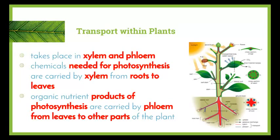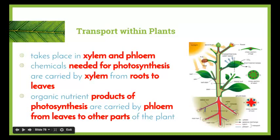The chemicals needed for photosynthesis are carried by the xylem from the roots to the leaves, and the organic products of photosynthesis are carried by the phloem from the leaves to the other parts of the plant. As we can see in the picture here, we have a cross-section of a plant — we've cut the plant straight down the middle and can now see the various structures. In a cross-section of the root, the red part is the xylem and the blue part is the phloem.